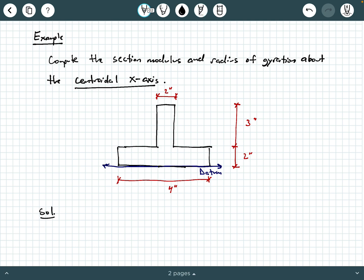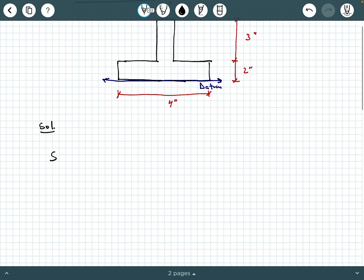For section modulus, we know that the section modulus about a particular axis is defined as the moment of inertia about that same axis divided by the centroidal location in the opposite direction, so s sub x is i x over y bar.